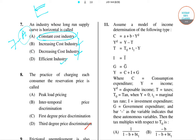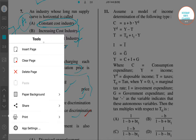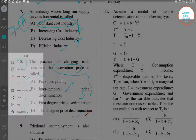We have come to the last question — question number eight. It asks: the practice of charging each consumer the reservation price is called — options are peak load pricing, intertemporal price discrimination, first degree price discrimination, and third degree discrimination. To answer this, we need to understand first degree price discrimination and reservation price.